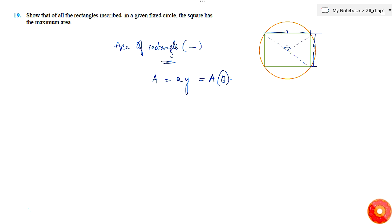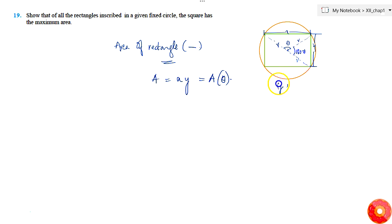Now, this angle is theta, and the opposite angle is 180 minus theta. All sides from the center to the circle are r, so we know r as a constant for a given circle. Only theta is the variable.